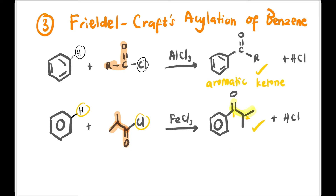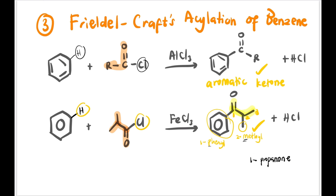Let's name the compound below. The parent name is propanone — three carbons — and the first carbon is attached to the C=O. The substituents are phenyl and methyl: phenyl at carbon one, methyl at carbon two. Writing alphabetically, methyl comes first. Full name: 2-methyl-1-phenyl-1-propanone.